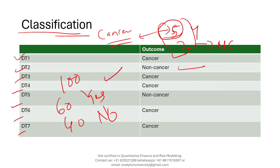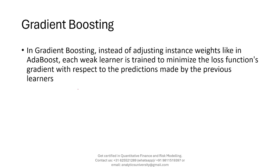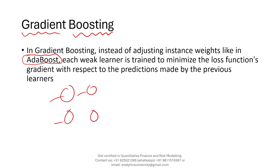Gradient boosting, or any boosting actually, relies on taking multiple samples, doing predictions on those samples, and then aggregating the results. But gradient boosting does it in a way that is different from other types of boosting like AdaBoosting. AdaBoosting uses adjustment of weights and is done sequentially. Gradient boosting is also done sequentially — you don't fit all samples at once, you do it sequentially. But it is done in such a way that you minimize the loss function's gradient with respect to the predictions made by the previous learner.